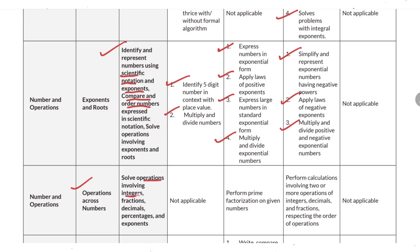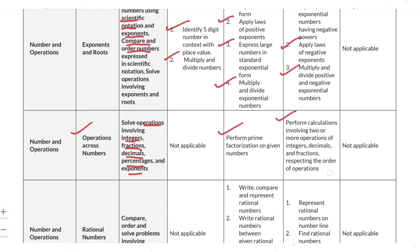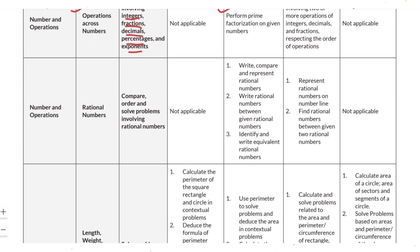Under operations across numbers, you need to solve operations involving integers, fractions, decimals, percentages, and exponents. This includes performing prime factorization of given numbers and performing calculations involving two or more operations with integers, decimals, and fractions, respecting the order of operations. The next subtopic is rational numbers, where you need to compare, order, and solve problems involving rational numbers — writing, comparing, and representing rational numbers, and writing rational numbers between given rational numbers.